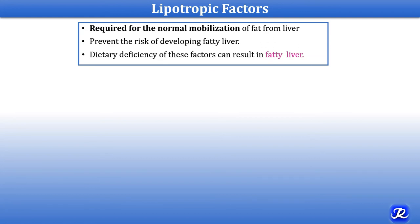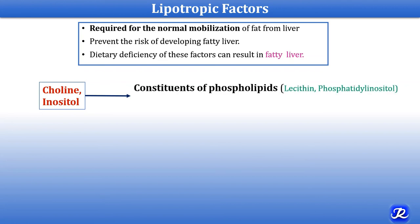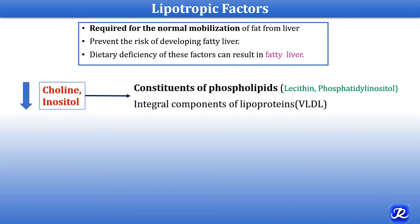How are choline and inositol important? Choline and inositol are constituents of phospholipids: lecithin (phosphatidylcholine) is made up of choline, and inositol is required for formation of phosphatidylinositol. These phospholipids are integral components of the lipoprotein VLDL. If choline and inositol are decreased, VLDL synthesis and triglyceride export are reduced, leading to fatty liver.